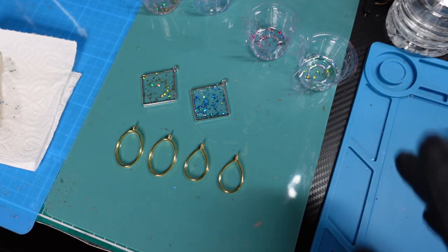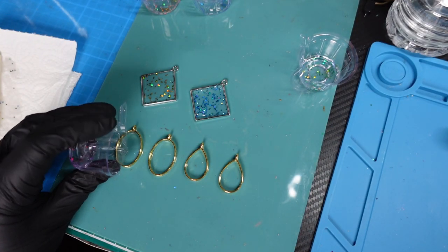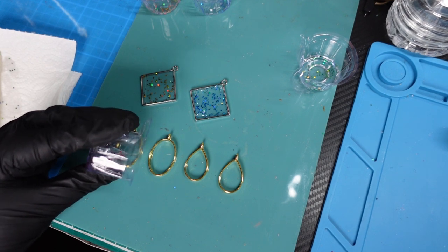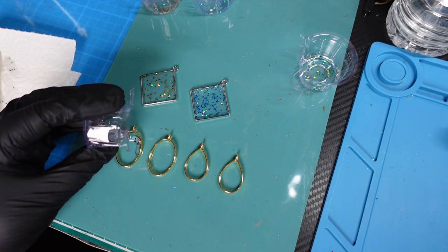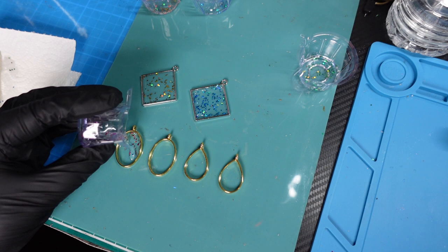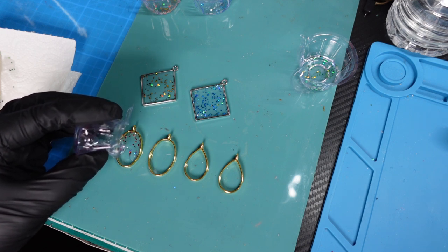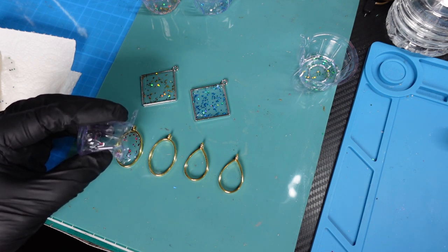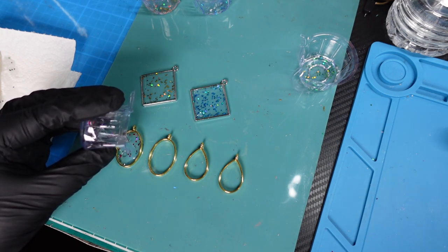Right, I'm going to let that settle. We'll get the red out now and we're going to put that into the first of these gold bezels. Now UV resin in my opinion is thicker than epoxy resin, so if you try to do this with epoxy it may seep out underneath.